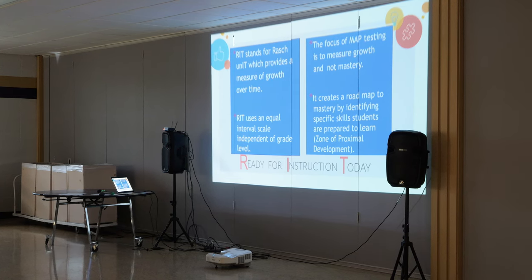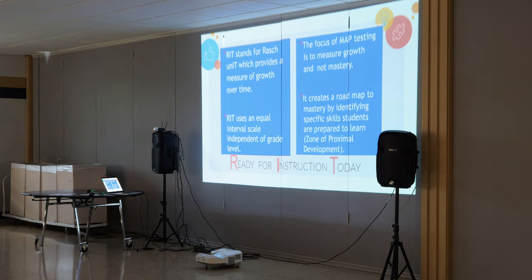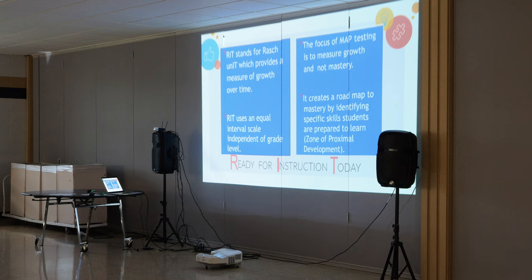Now, the other reason for that is that they use a RIT score, which actually stands for ROSH unit. There's an actual man with the last name ROSH, and he created this measure of growth. So it's a measure of growth over time. You give a fall, winter, spring, because that measures a certain amount of instructional days in between each testing administration. But it's an equal interval scale, so your kids move along the scale. It's not mastery that you're looking for — it's just growth. So if they are mastering those standards along the way, then they'll show the growth.